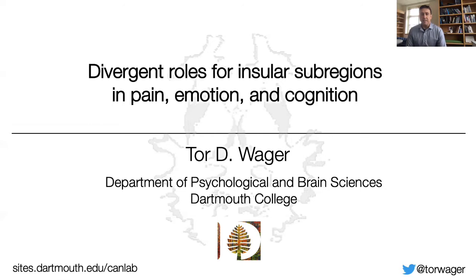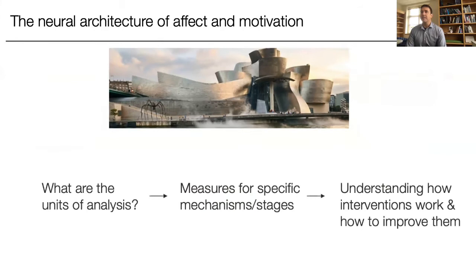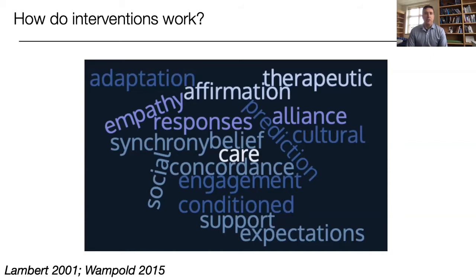Thinking about and preparing this talk has taken me in an interesting new direction, because we've spent the last decade or so working with multivariate patterns distributed across the brain, focusing less on the role of any one particular region or set of regions. This challenged me to take a new look at some of the data we have, which has gotten me quite excited. I'm going to start with a note on neural architecture. I'm interested in the neural architecture of affect and motivation. In many fields we know what the units of analysis are — in genetics, arguably — but in brain science we don't really know what the units of analysis are when it comes to affective and motivational processes.